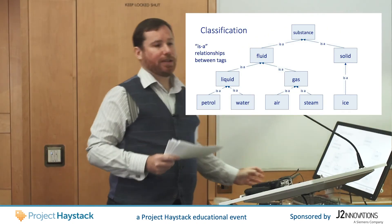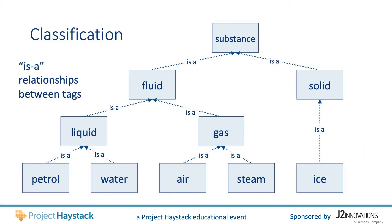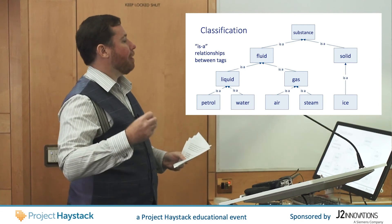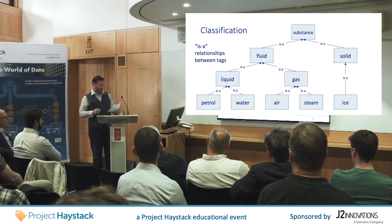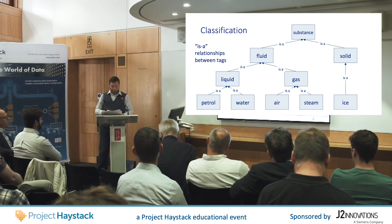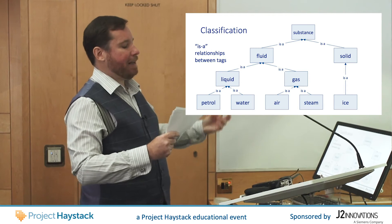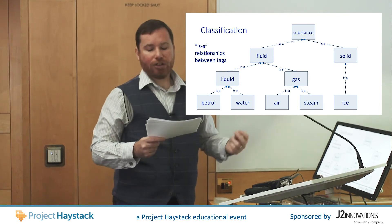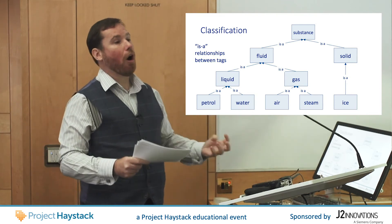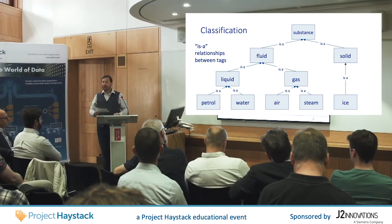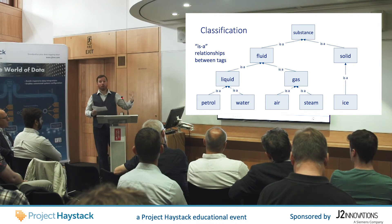The next thing Project Haystack 4 introduces is a means of classification. In a way, this is where tags are used to describe tags. When we look up a definition of a tag like water, it points to another tag and says, hey, I'm one of these. So water is a liquid, is a fluid, is a substance, and so on. It lets us build up a hierarchy that describes what tags are. This means that I only need to tag my data with water, and then I can automatically infer all the other tags from that. Project Haystack 4 gives a mechanism to describe hierarchies and also provides pre-made libraries of common building automation tags and their hierarchies, so I have a concrete language that already describes things like water, ice, and air.